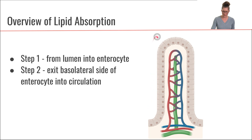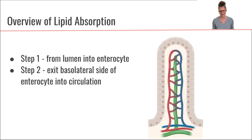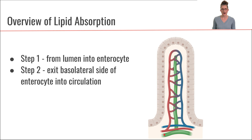We have to first get across the luminal side of the enterocyte. Then, once we're inside the enterocyte cell, in order to actually get into the body, we also have to get across the basolateral side. In this picture of a villus, you'll notice that the villus has blood vessels in it, represented in blue and red, and additionally the villus has a lacteal in it, which is part of the lymphatic system represented in green. That will become important as we're absorbing these lipids into our body.